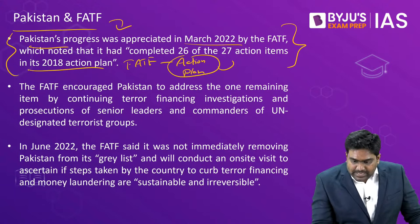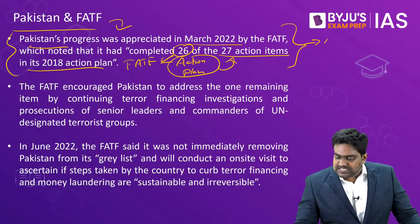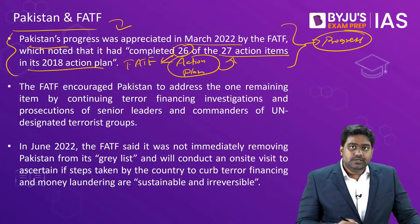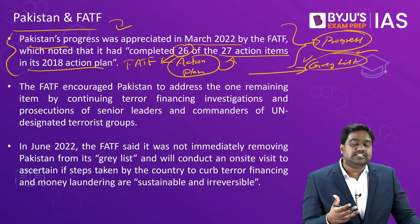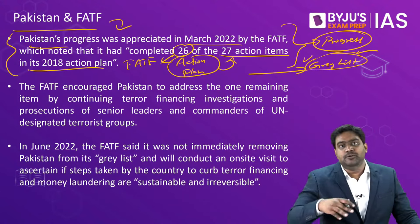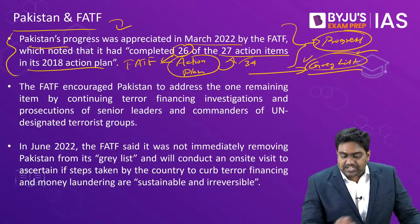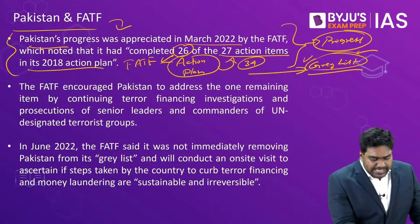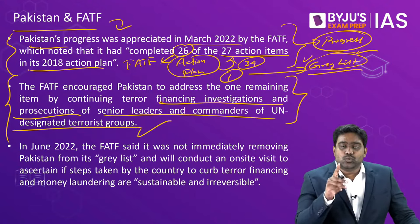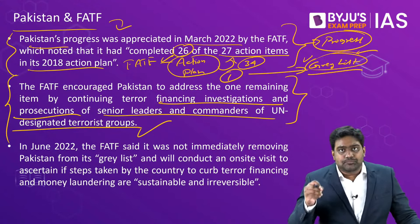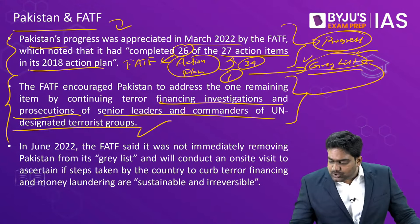FATF gave Pakistan an action plan with 27 action points. Over the last four years, Pakistan implemented 26 of them, showing some progress. FATF reviewed the performance of Pakistan but was not entirely satisfied, so it didn't remove Pakistan from the grey list, nor did it push Pakistan onto the blacklist. Another action plan was given with 34 action points. Pakistan has implemented most of them except for one — investigating and prosecuting UN designated terrorists like Hafiz Saeed and Masood Azhar. For this reason, Pakistan continues to remain on the grey list.